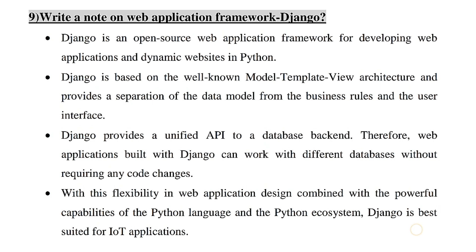The first thing is to handle the communication of multiple APIs and data models — that is a unified API. Therefore, web applications built in Django can work with different databases without requiring any code changes.